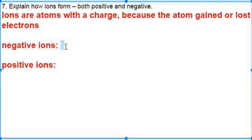What charge do electrons have on them? They're negative. So if you gain more electrons, guess what kind of ion you form? A negative ion. So negative ions are atoms that gained electrons.